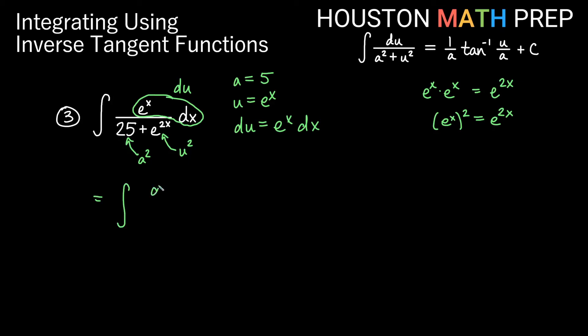So that becomes then the integral exactly of our definition, du over a squared plus u squared. We've got this set up. We'll use exactly our definition. That becomes 1 over a inverse tangent of u over a plus c. And now replacing our u and our a, that's going to give us 1 fifth inverse tangent of e to the x over 5 plus our constant.